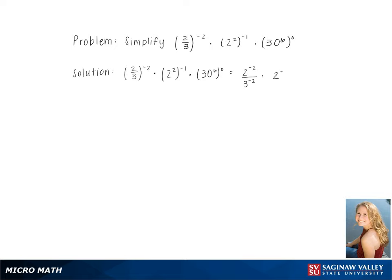Then we have 2 to the negative 2 multiplied by 1, because anything to the 0 power is 1. This gives us 3 squared over 2 squared times 1 over 2 squared. Simplifying gives us 9 over 4 times 1 over 4, which gives us a final answer of 9/16.